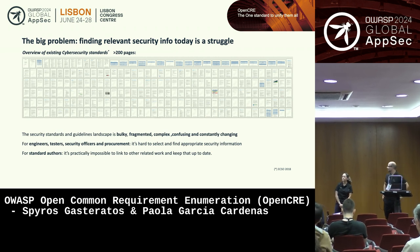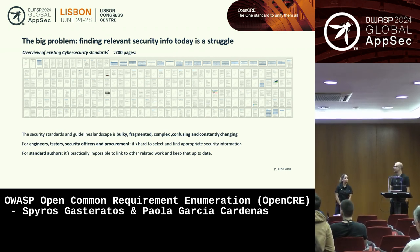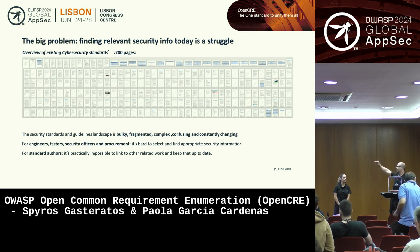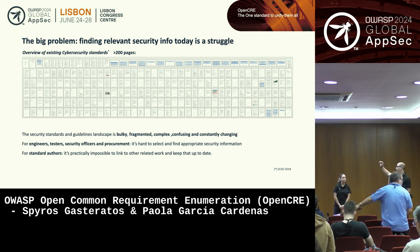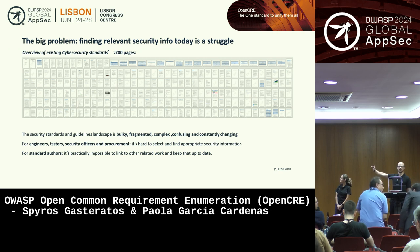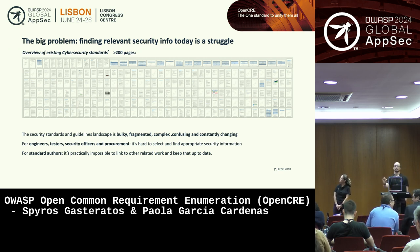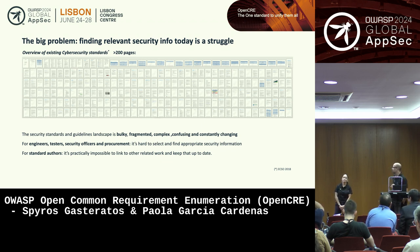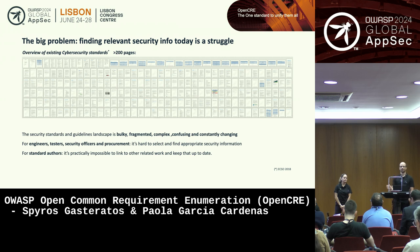But there is a big problem. Finding relevant security information today is a struggle. This is a study by the European Cyber Security Organization, done in 2019 — it is a list of security standards out there. There is a small problem: this list is more than 200 pages. There is no reason for any list to be more than 200 pages, let alone a list of security information that you need to follow.